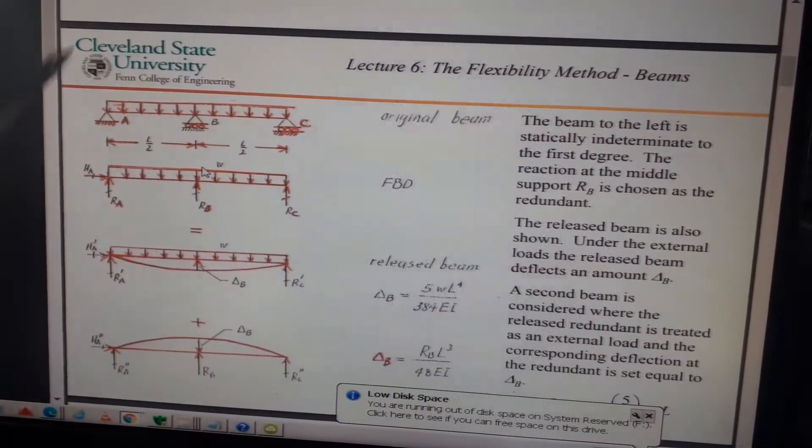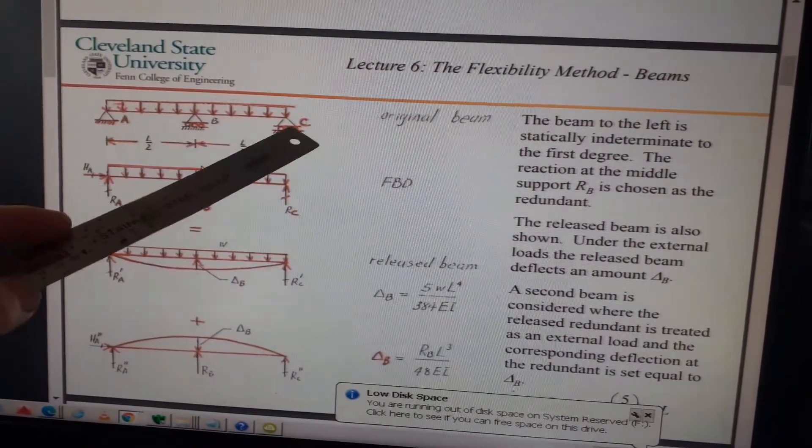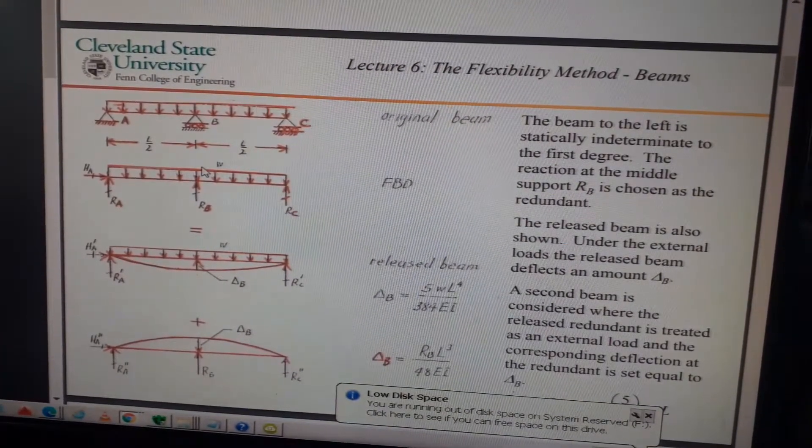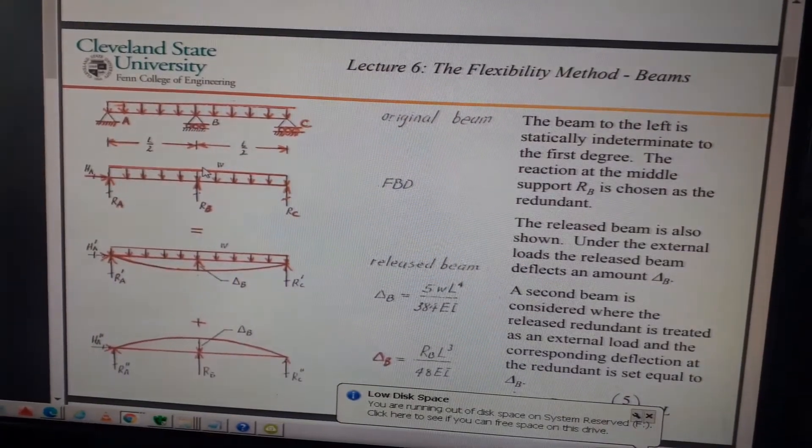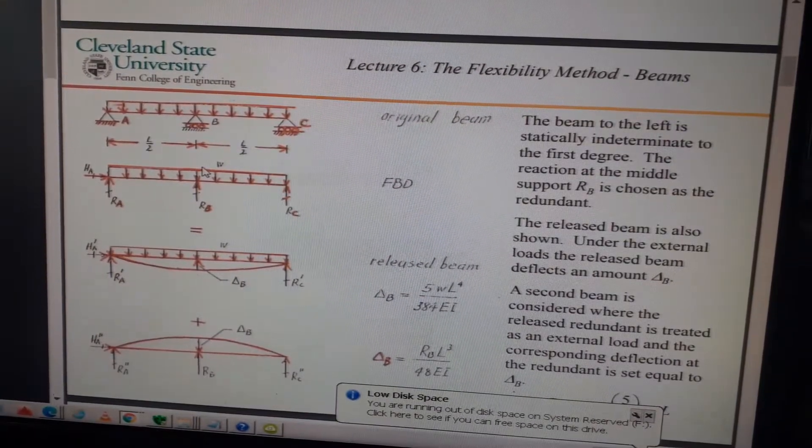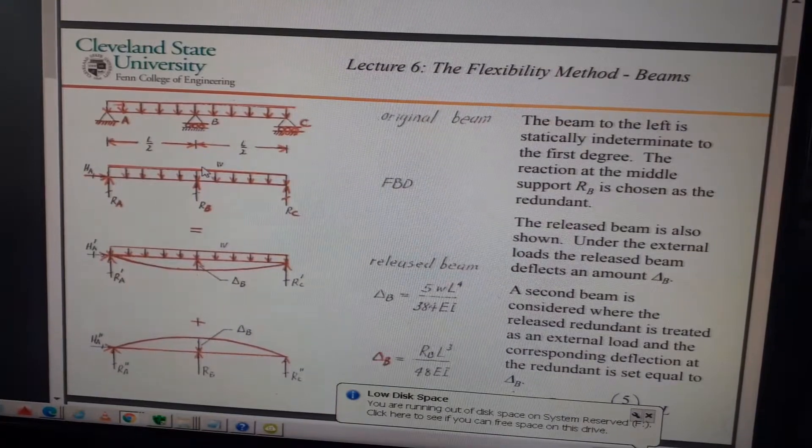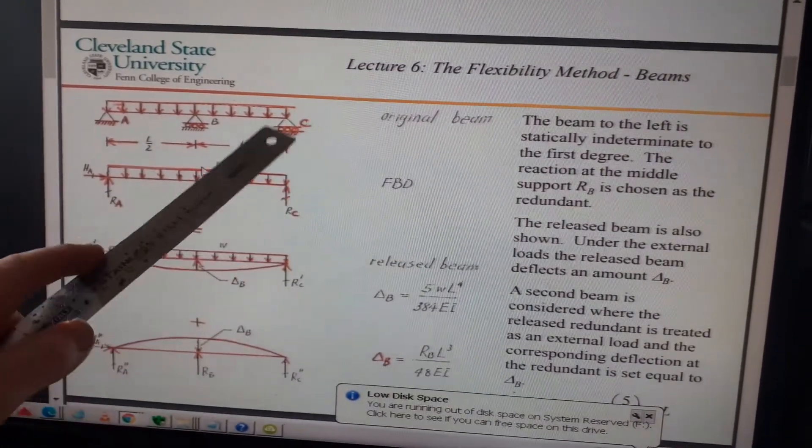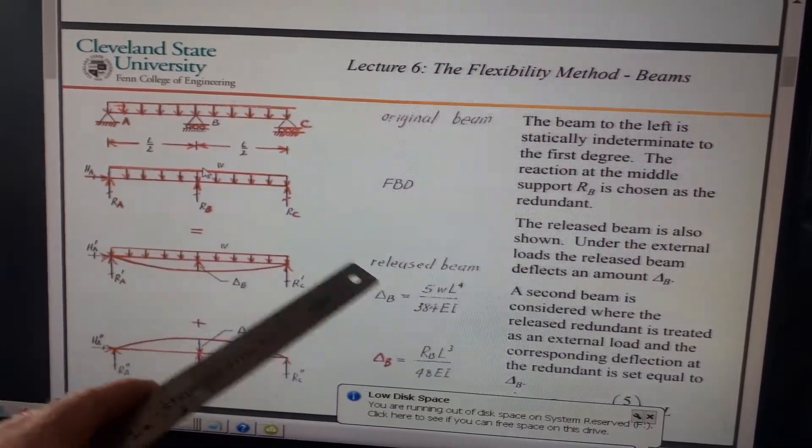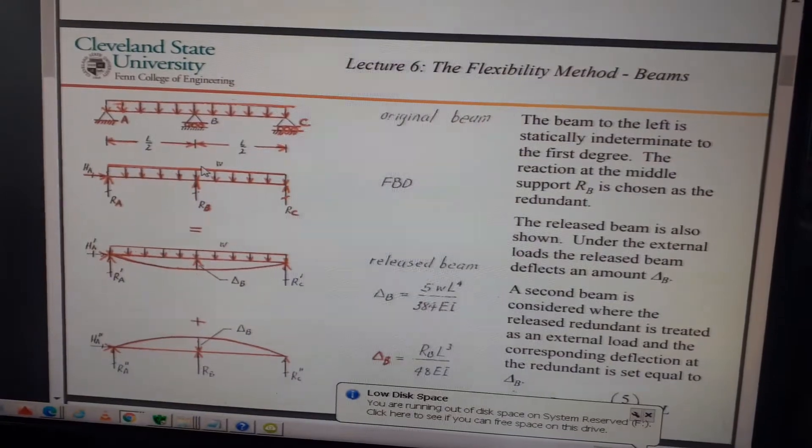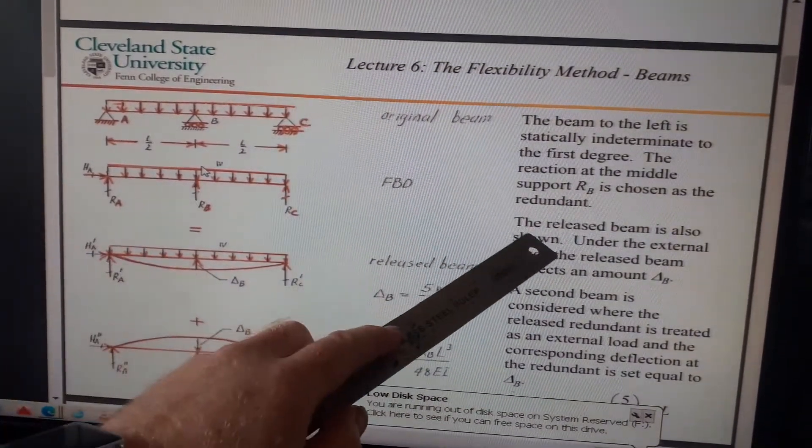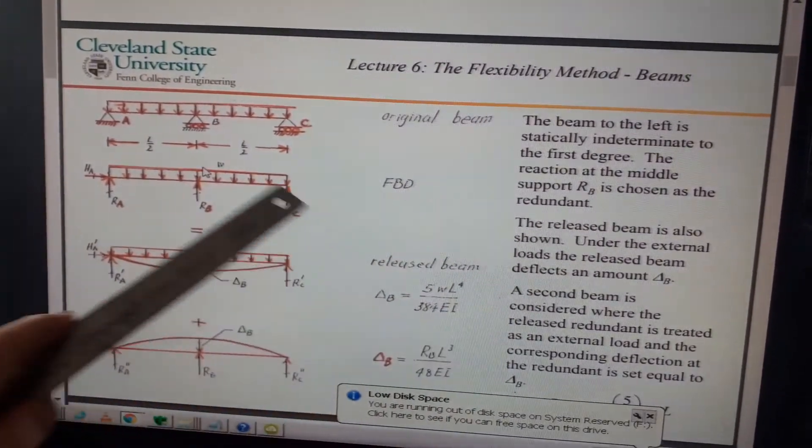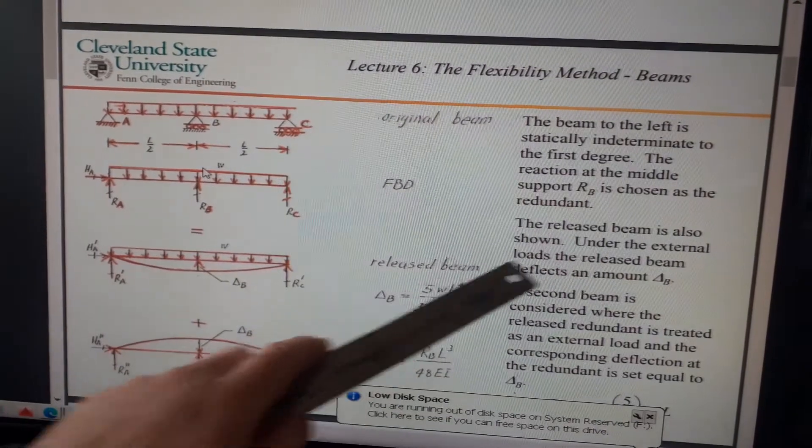The reaction of the middle support RB is chosen as the redundant. It doesn't say, but basically - I'll just add this in myself - there's three equations of equilibrium and four unknown reactions, so therefore this structure is statically indeterminate to the first degree. So we can't solve it through overall equilibrium; we can't find the reactions because there's one too many. This is still a simple structure because it's only one degree indeterminate. So the way to solve it, we're going to use the flexibility method. The reaction of the middle support RB is chosen as a redundant, so we're going to take away RB.